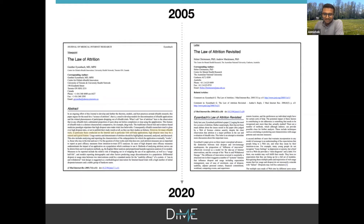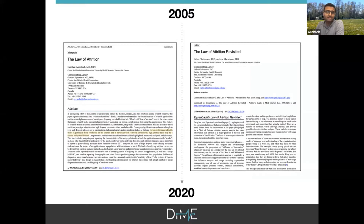The status quo is pretty much the same as 2005, almost 15 years ago. There were commentary articles from Helen Christensen and Gunther Eisenberg at JMIR back in the day, emphasizing the need to understand signs of user attrition in e-health trials — which are no different from digital health today. But we haven't really changed the curve on our understanding since then.